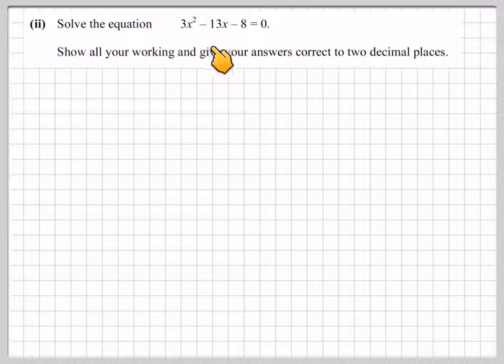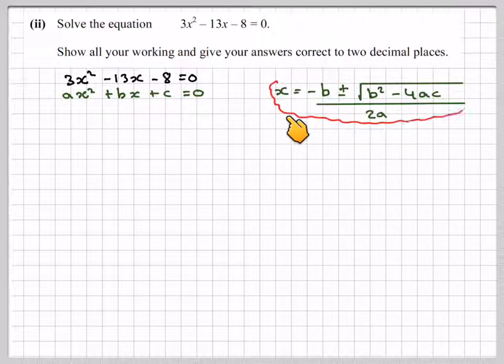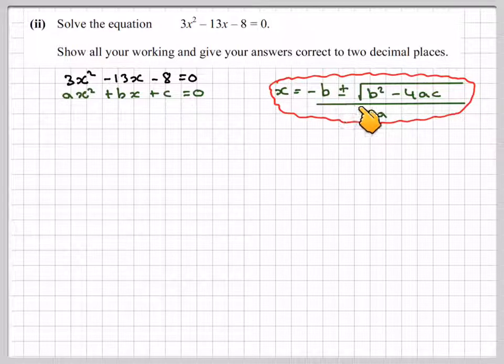Solve the equation 3x² - 13x - 8 = 0. Show all your working and give your answers correct to two decimal places. If a quadratic, you're solving it to two decimal places, then the clue is that you need to be using the quadratic formula, which you need to learn for the exam. So x = (-b ± √(b² - 4ac))/2a. Good idea to write out ax² + bx + c = 0. So a is 3, b is -13, c is -8. Now when substituting in, you should use brackets.